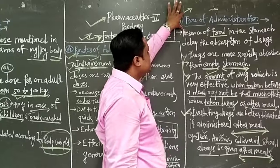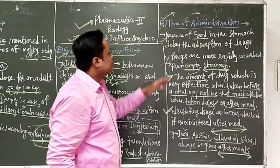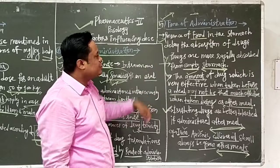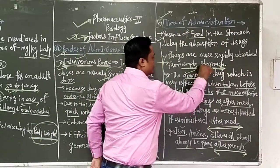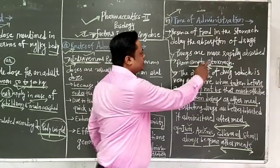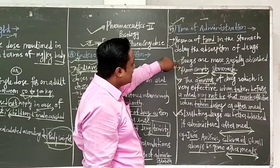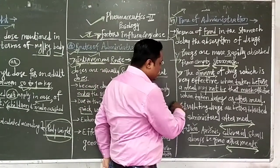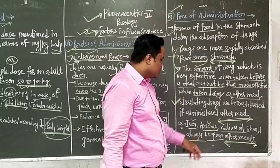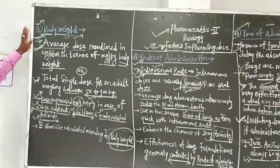The third factor is the time of administration — meaning the presence of food or without food in the stomach. Various drugs have delayed absorption in the presence of food. For example, those drugs that are more rapidly absorbed from an empty stomach are given before meals, because absorption is more rapid on an empty stomach; if given during or after meals, absorption is less. The second example is irritating drugs, which are better tolerated after meals. For example, iron, arsenic, or castor oil should always be given after meals. These are the three factors influencing the dose of drugs.